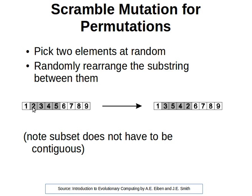So let's say randomly we choose two numbers: r1 is here and r2 is there. That's our subarray. We then randomize the elements, and the resulting chromosome now looks like this right after applying scramble mutation.